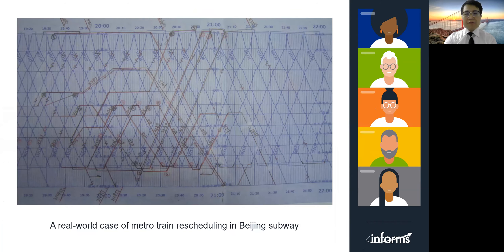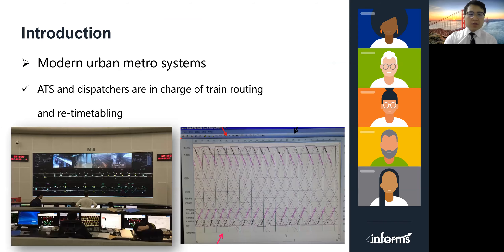About five years ago, dispatchers in Beijing metro still used pencils and manual instruments to reschedule the timetable by hand, drawing train timetables in order to recover from incidents. Today, dispatchers in urban railway systems already use computer-aided ATS, and dispatchers are in charge of train routing and re-timetabling with the aid of computers. However, it is still not yet solved that the decisions to reschedule timetables remain dependent on manual labor.